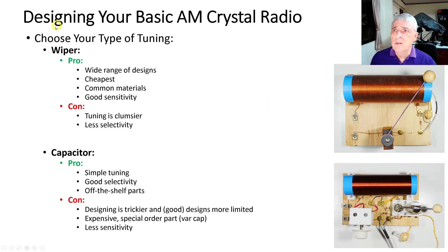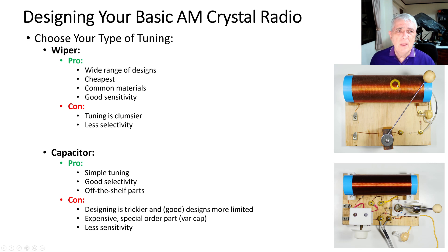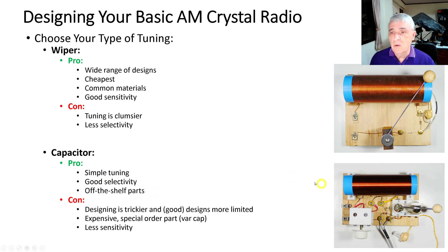First, choose your type of tuning. The wiper style has a wide range of designs, is the cheapest using common materials, and gives good sensitivity. The con is clumsier tuning — you have to slide the wiper back and forth over the windings — and there's less selectivity, meaning a loud station can overpower quieter ones. The capacitor style has simple knob tuning and good selectivity, and uses off-the-shelf parts. The cons are trickier design, limited good designs, higher cost due to the variable capacitor, and slightly less sensitivity.